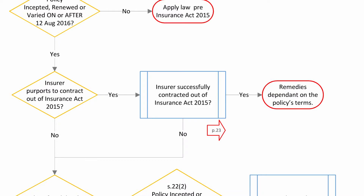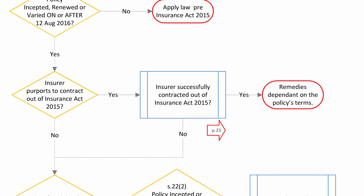This brings us to an important group of questions. A key provision of the Act allows insurers to contract out of its provisions. You should therefore check whether you are looking at a policy that states that the Act does not apply. If you have a policy with such a term, follow the yes arrow right, where you will see there is a blue box. Turn to page 23 of the guide, which will help you assess whether the policy has successfully contracted out of the Act. Once you have followed the chart on page 23, you will have your yes or no answer as to whether the insurer has successfully contracted out. If they have, follow the yes arrow and consider the claim in relation to the policy's terms. However, if the insurer has not contracted out of the Act in relation to non-disclosure and misrepresentation, successfully or at all, then follow the no arrow down to the next question.